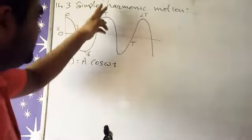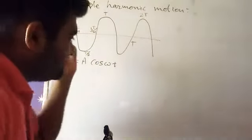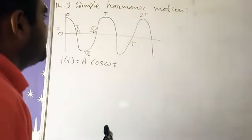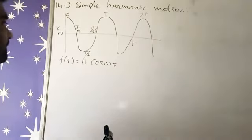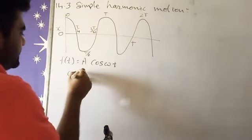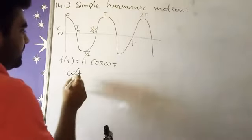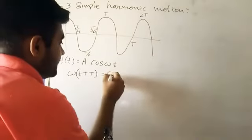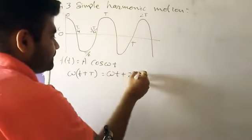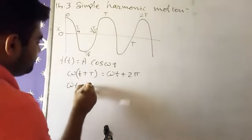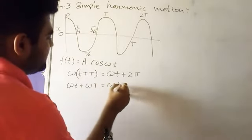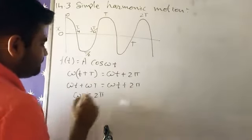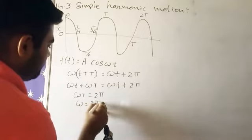If we want to write that ω(t + T), so I can write ωt + 2π. So left-hand side ω(t + T) = ωt + 2π. That means ωT = 2π, means ω = 2π/T.